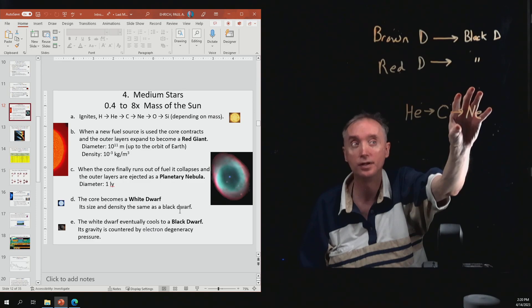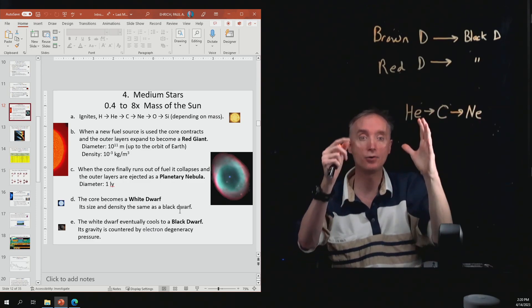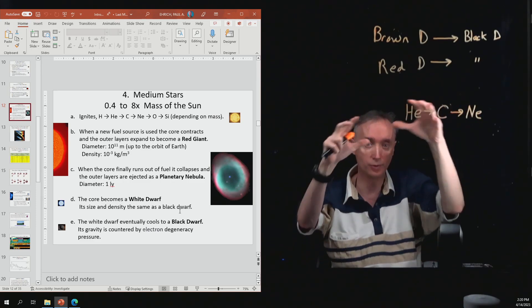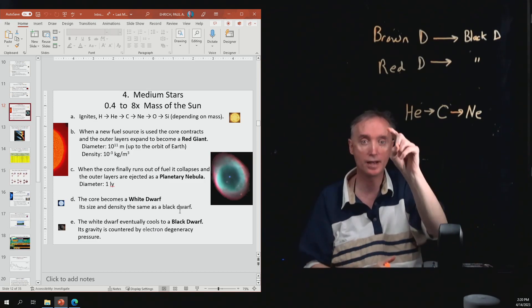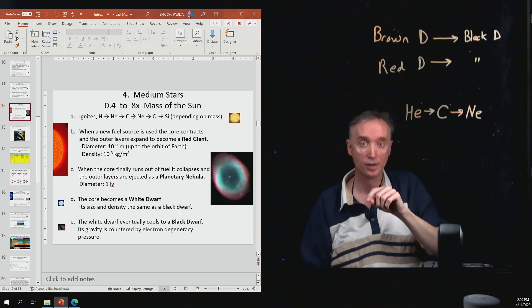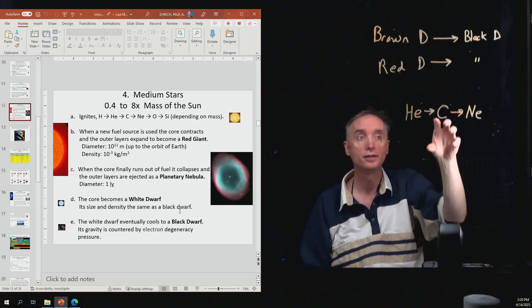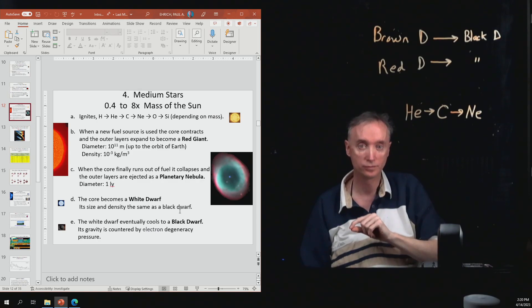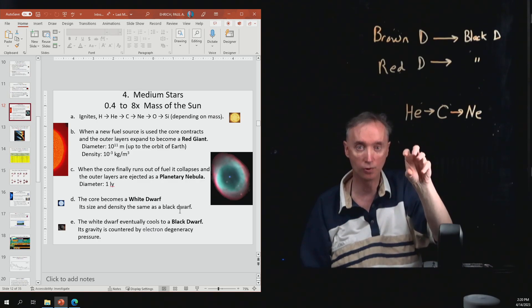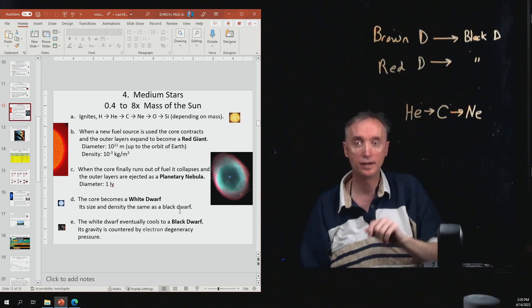So what's going to happen is that the outer part, the red giant part, will be ejected into outer space as a planetary nebula. And then the core part is going to be a white dwarf. The middle part, the original core is going to be a white dwarf. It's going to start to cool off, and eventually it turns into a black dwarf.